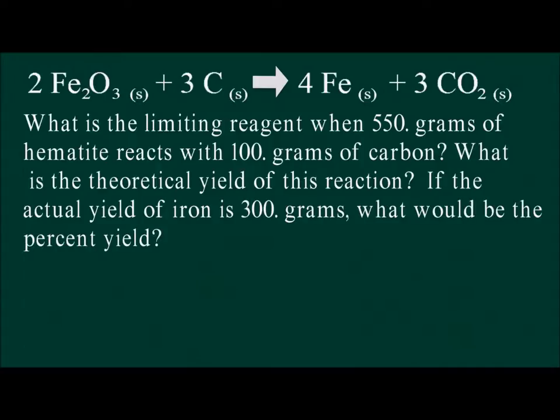The first step to completing this problem is to identify what the problem is asking. We need to identify the limiting reagent, which will be either hematite or carbon. We need to calculate the theoretical yield of iron. The actual yield of iron given in the question is in grams, so our theoretical yield should be in grams as well. And finally, we need to calculate the percent yield of the reaction.